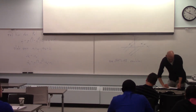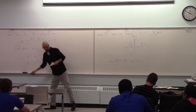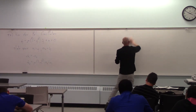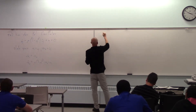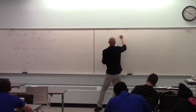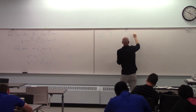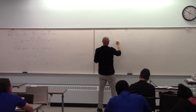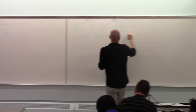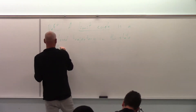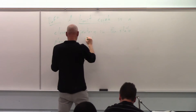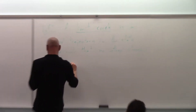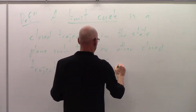Let's define what a limit cycle is. You see them in nonlinear systems. A limit cycle is a closed trajectory in the state plane such that no other closed trajectory can be found close to it.